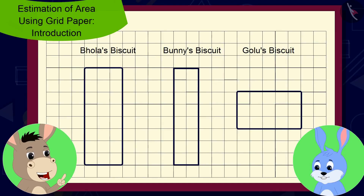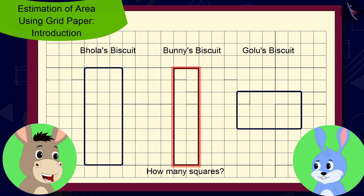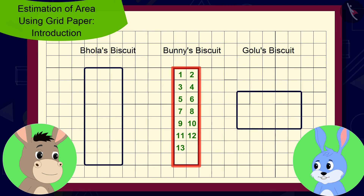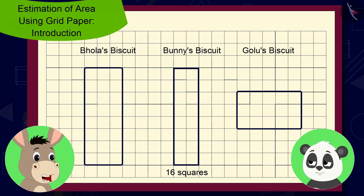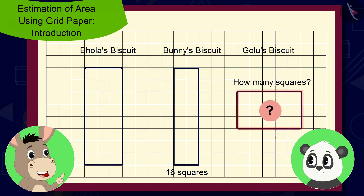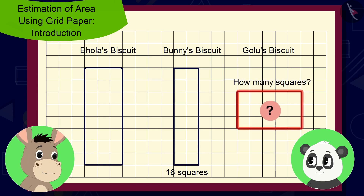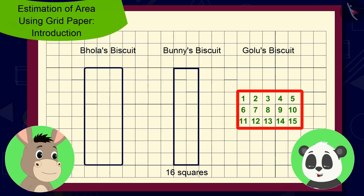Bunny, can you tell me how many squares are there in the shape of your biscuit? Bhola asked Bunny. Bunny quickly counted the number of squares and said, 16 squares. And Golu, tell me how many squares are there in the shape of your biscuit? Bhola asked Golu. Hmm, 15 squares.